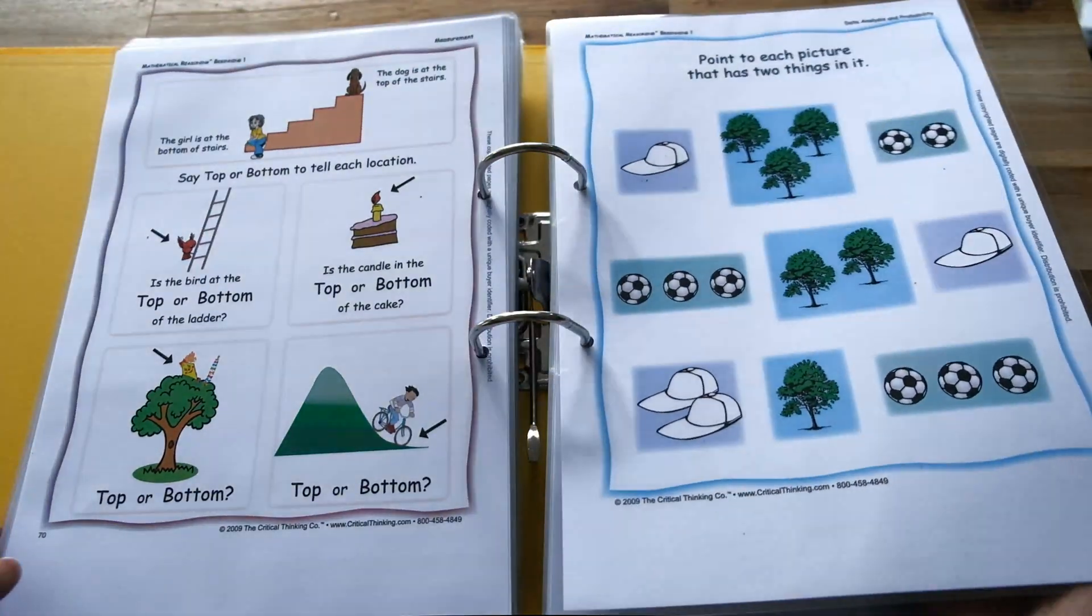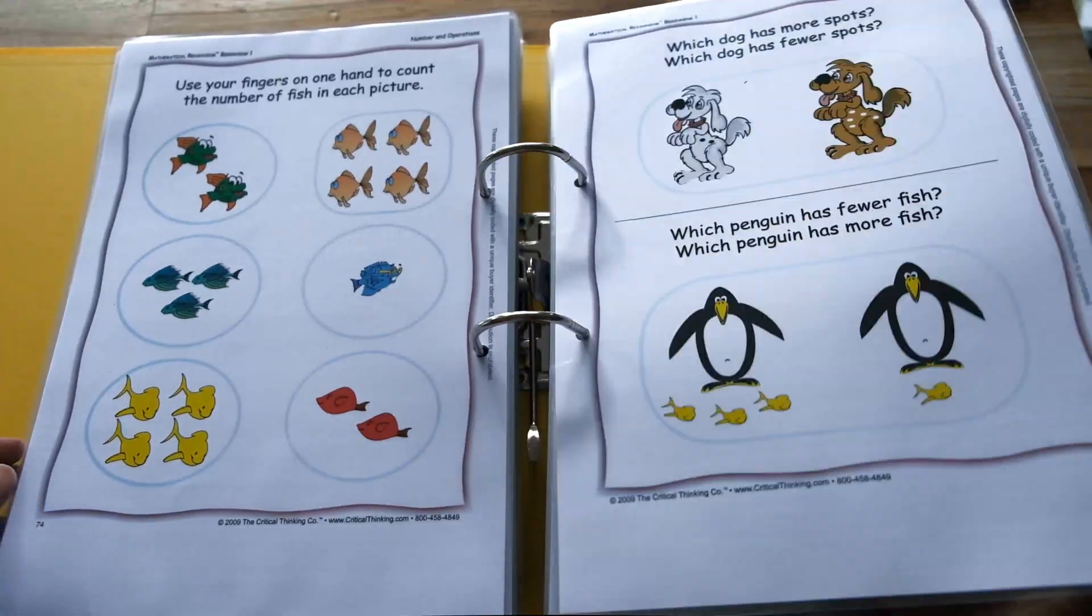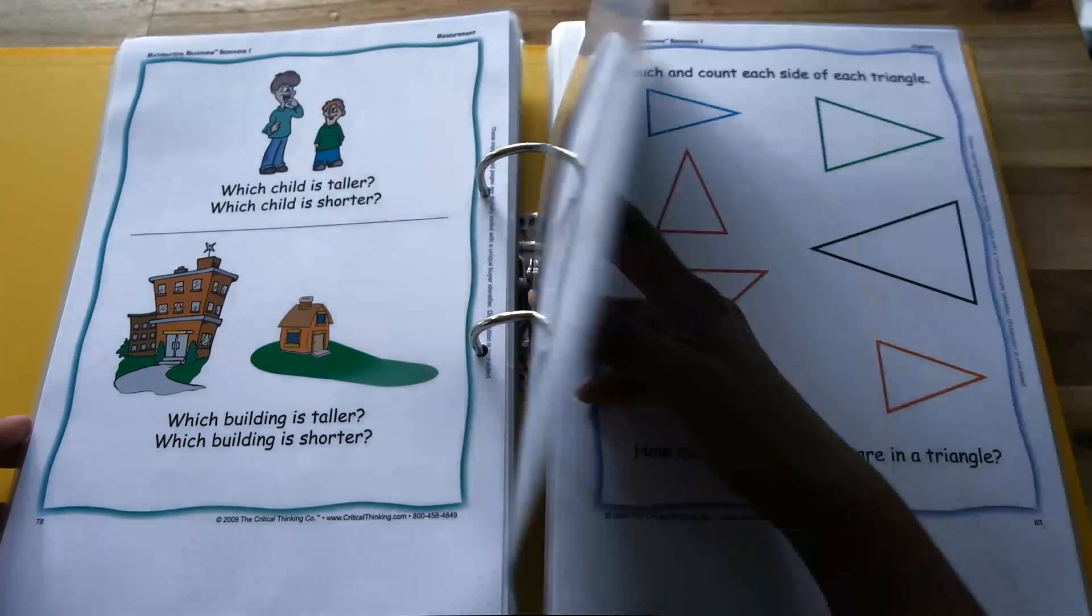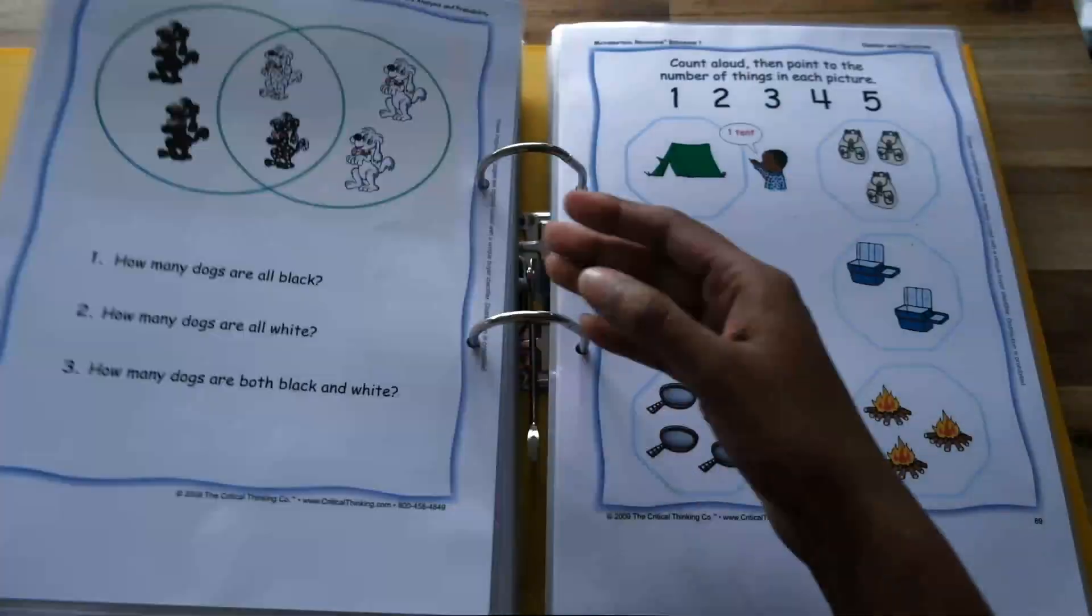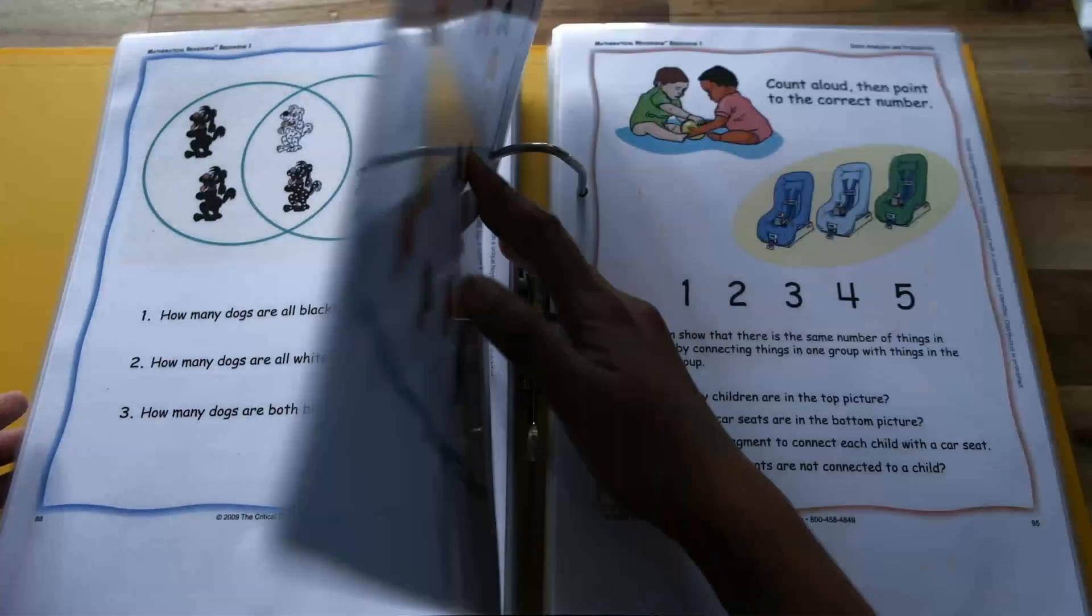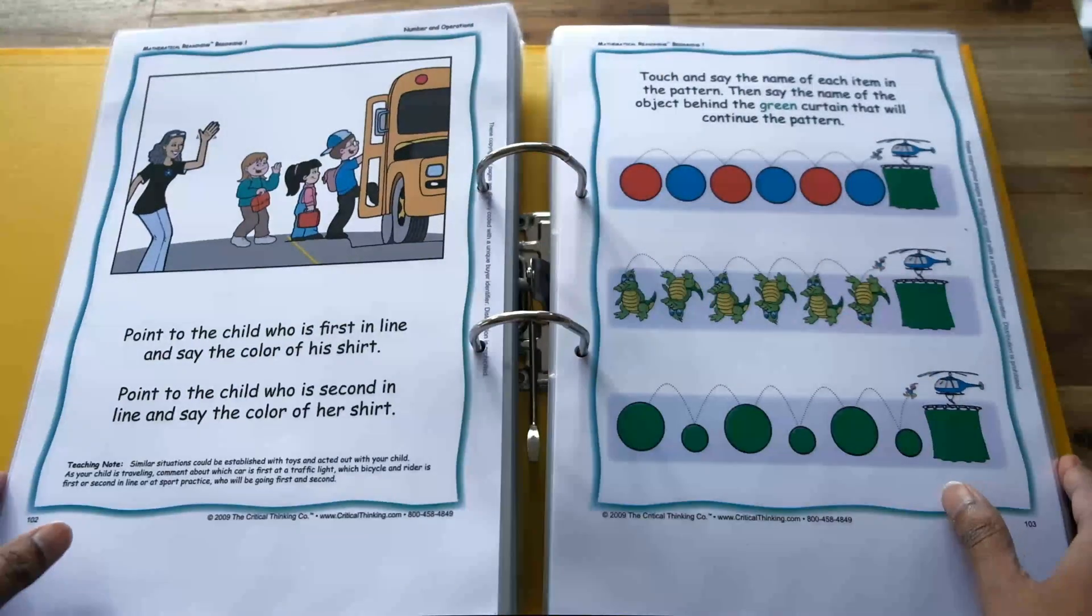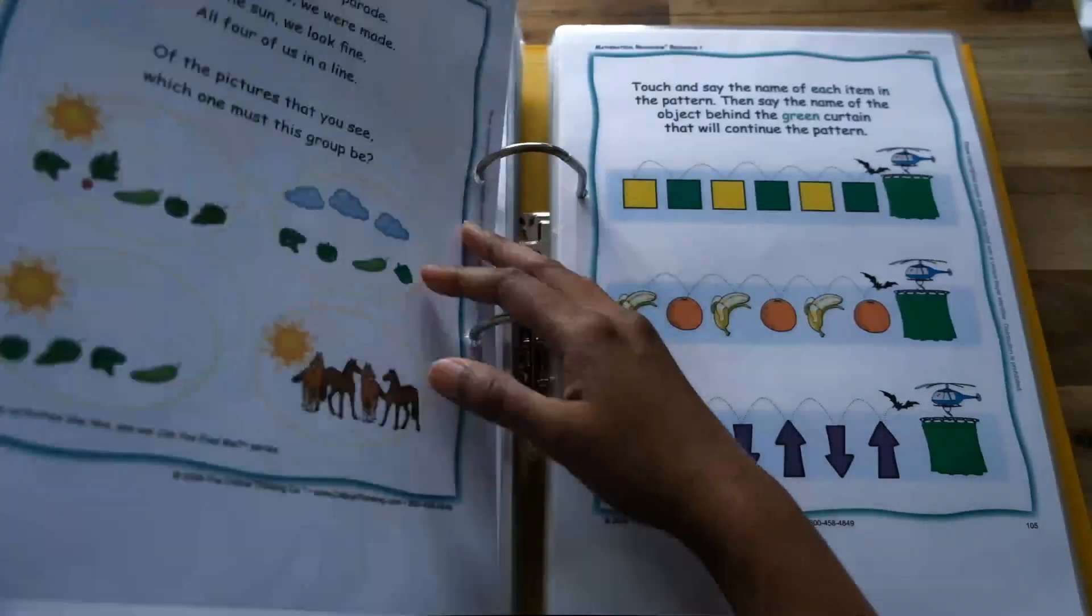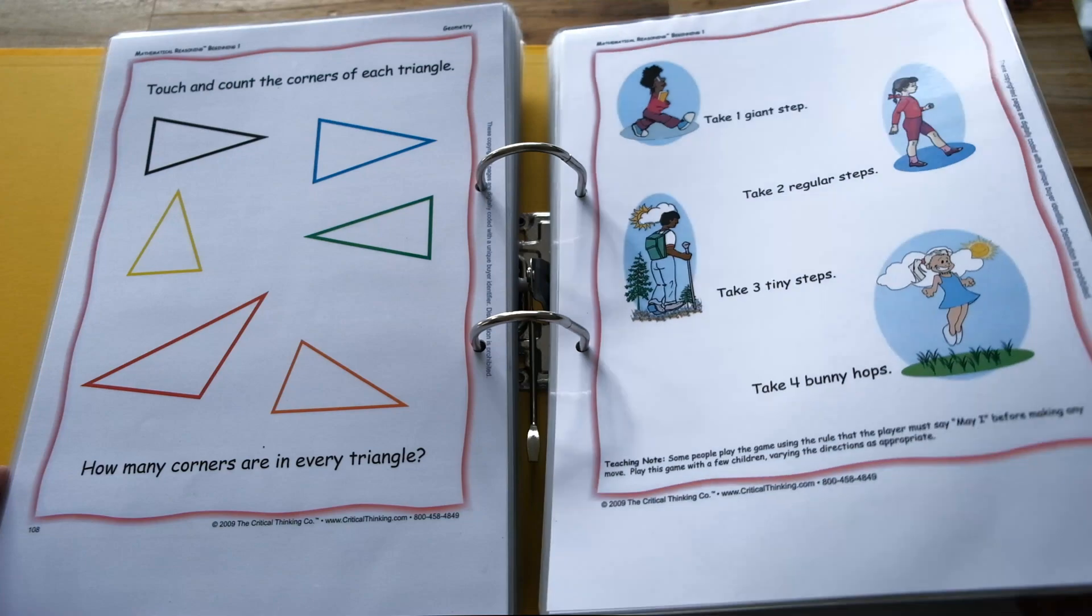The Mathematical Reasoning series covers a wide variety of topics such as counting, ordering, comparing and estimating, addition, subtraction, geometric shapes, fractions, patterns and a whole lot more. It's also very colorful and engaging. My daughter just completed this level and she thoroughly enjoyed it and she's super keen to start the next. That's really fantastic.